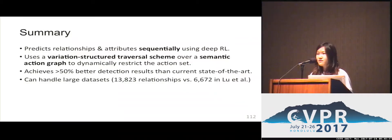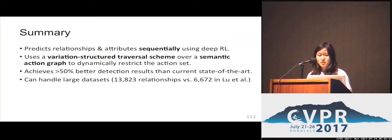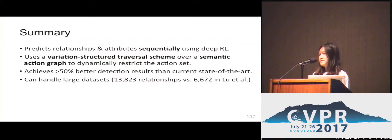It achieves significantly better detection results than the current state of the art on large datasets involving thousands of relationships. It is also capable of zero-shot learning by learning semantic correlations on shared graph nodes.